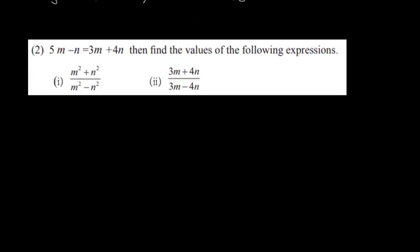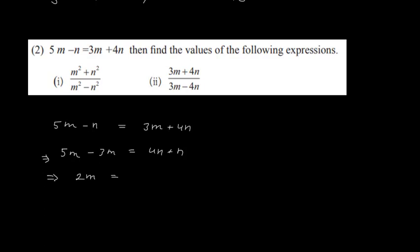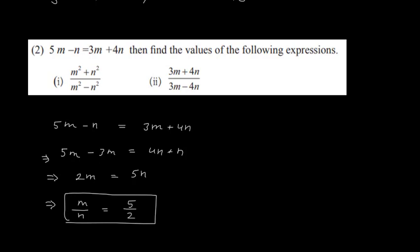Now the next question: 5m − n = 3m + 4n. Find the values of expressions. We bring all m terms to one side: 5m − 3m = 4n + n, so 2m = 5n. From here we find m/n: m/n = 5/2.